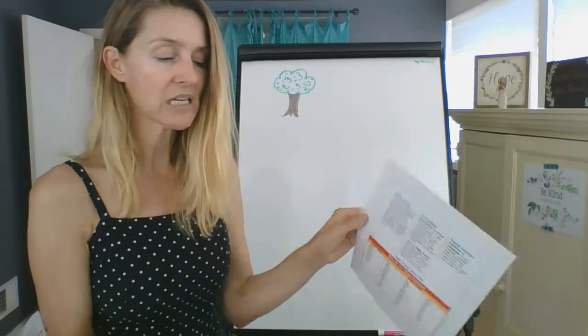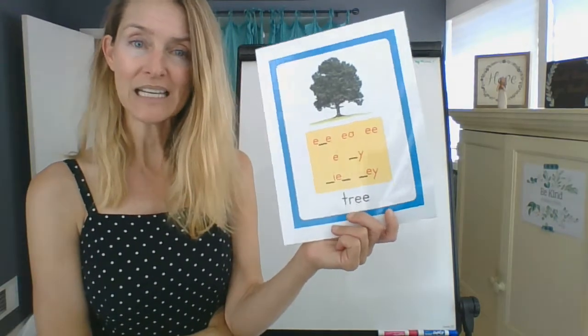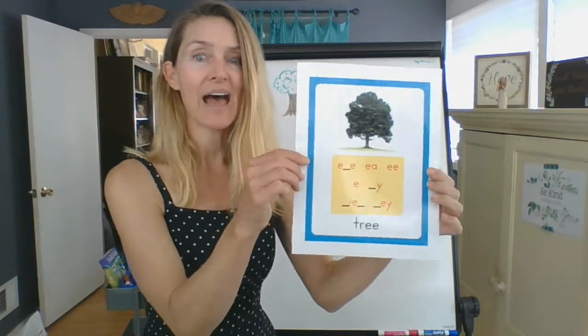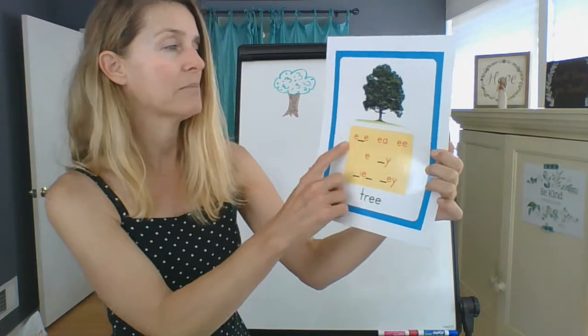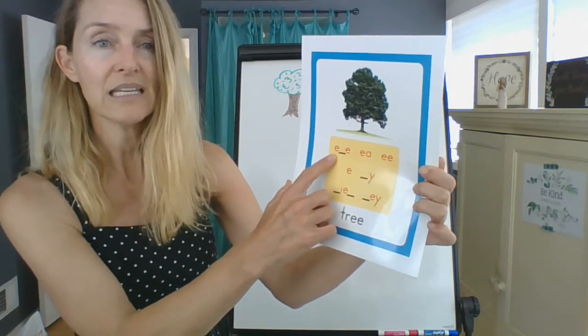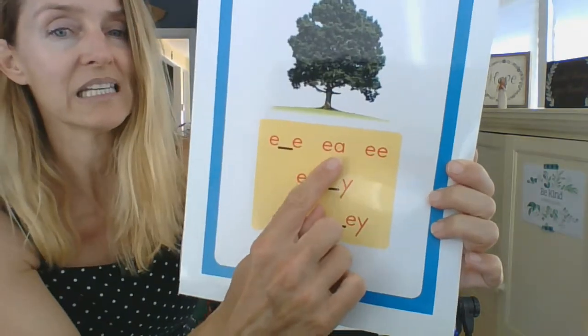But most of the time, you will find the long E sound has different spelling patterns that make it say the E sound, and one of those ways is EA.